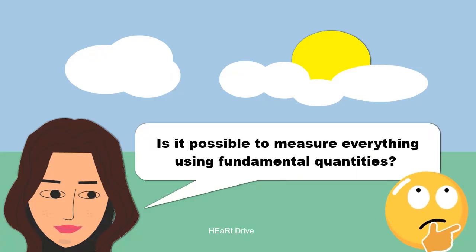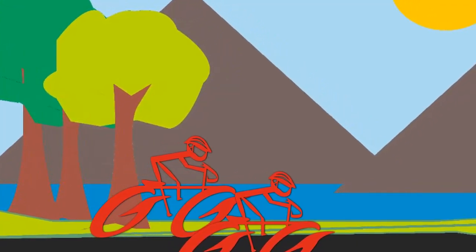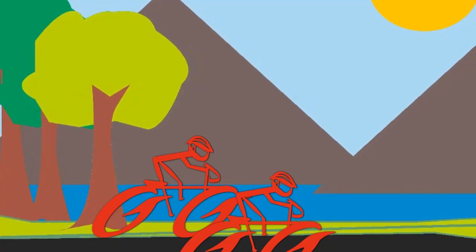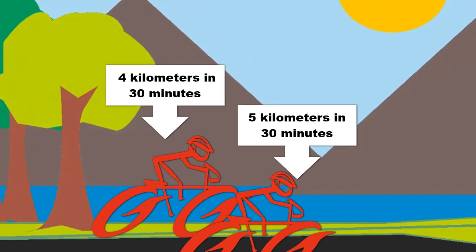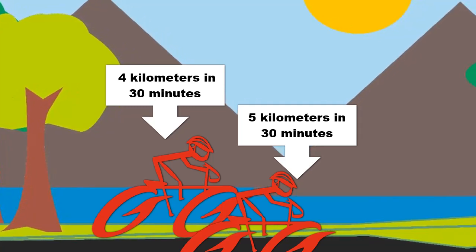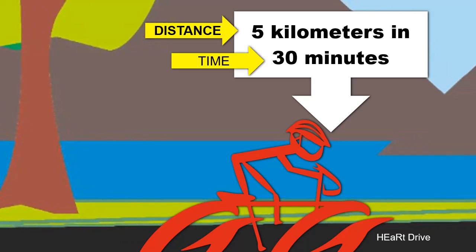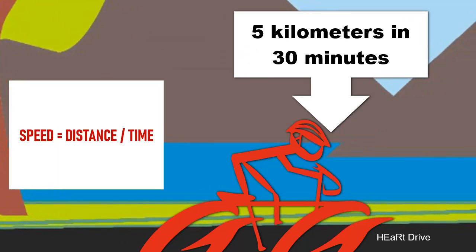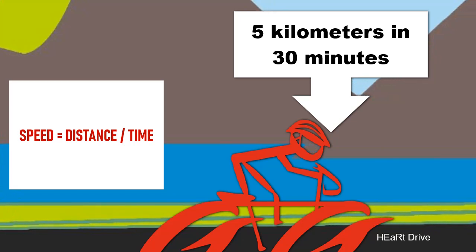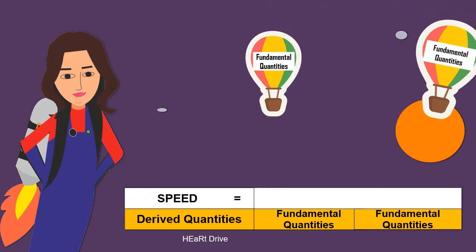Do you think it is possible to measure everything in the world just using fundamental quantities? Consider two boys riding bicycles — to find which bicycle is the fastest, we should consider the time taken and distance covered. To calculate the speed of a bicycle, we use two quantities: distance and time. So speed is a derived quantity.